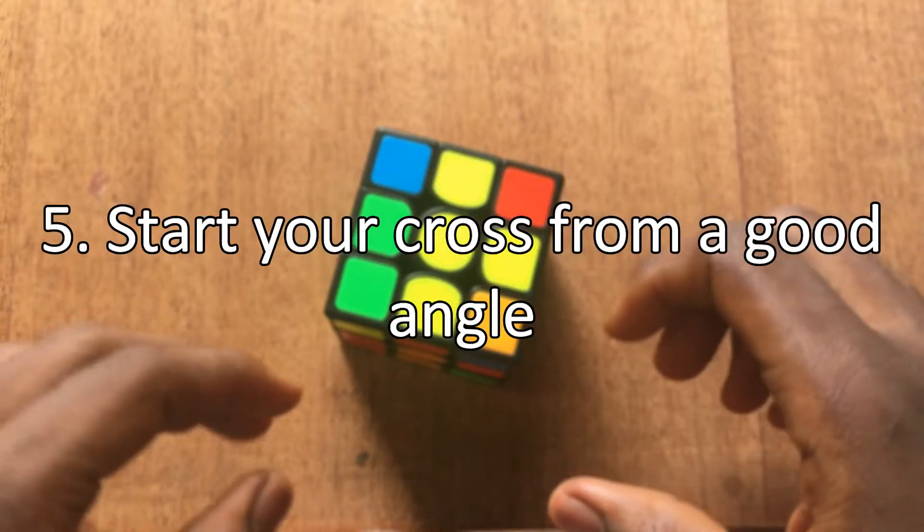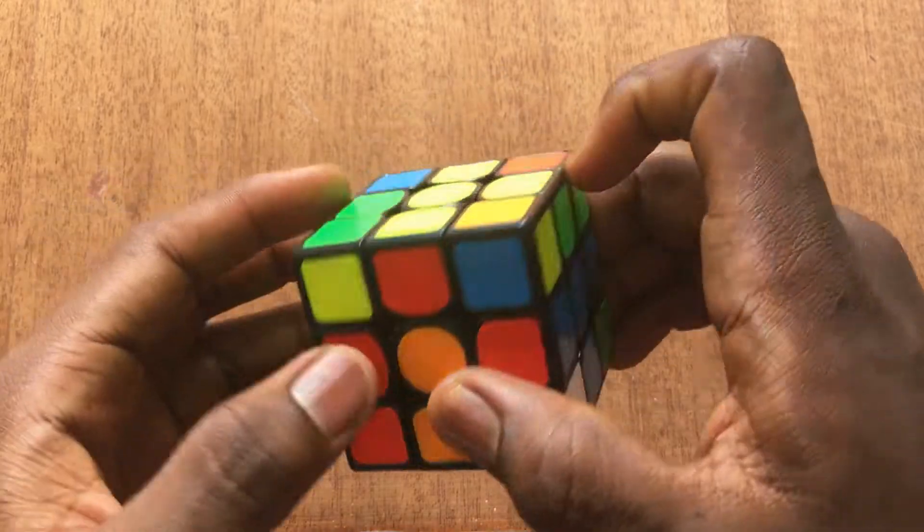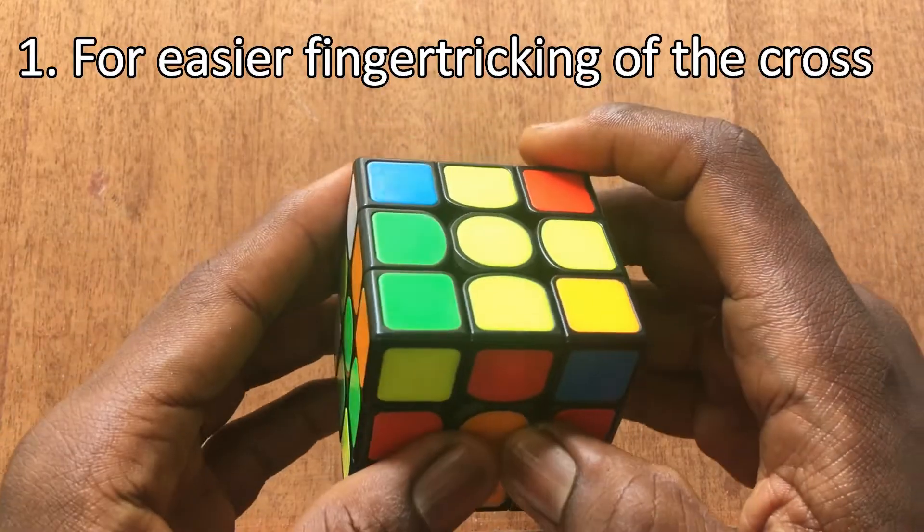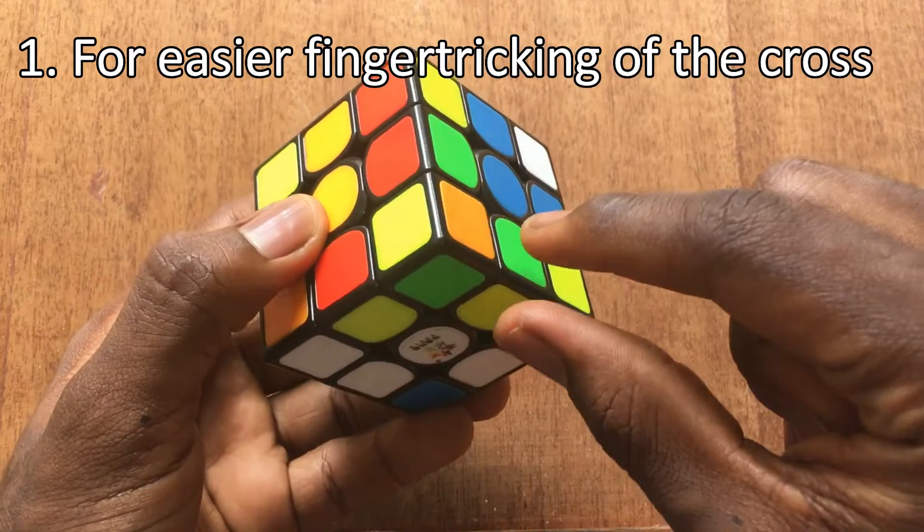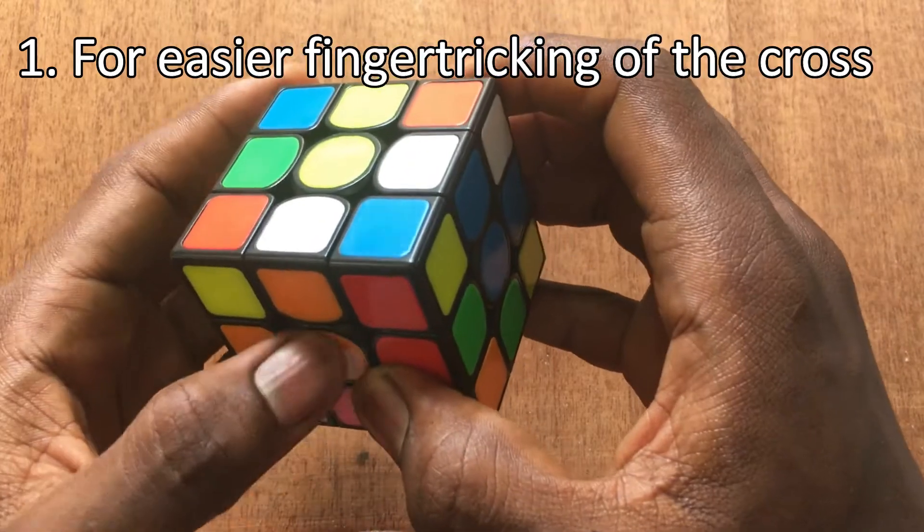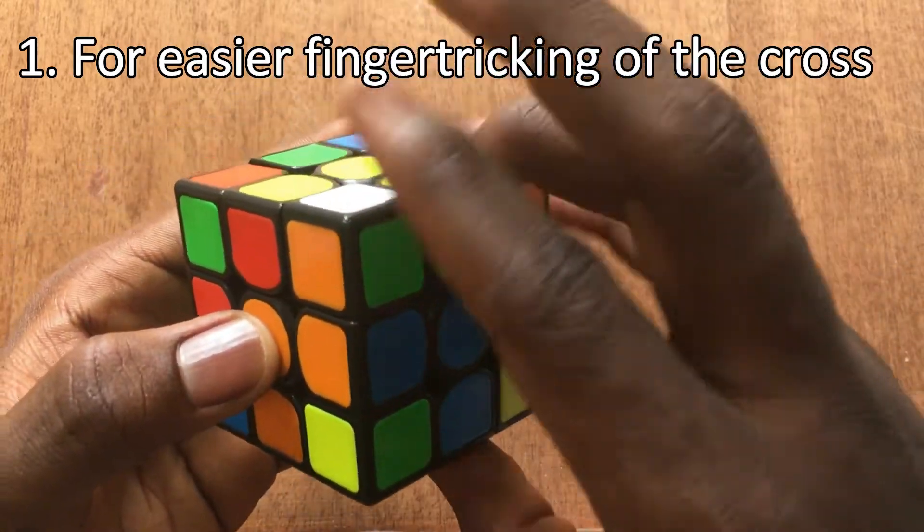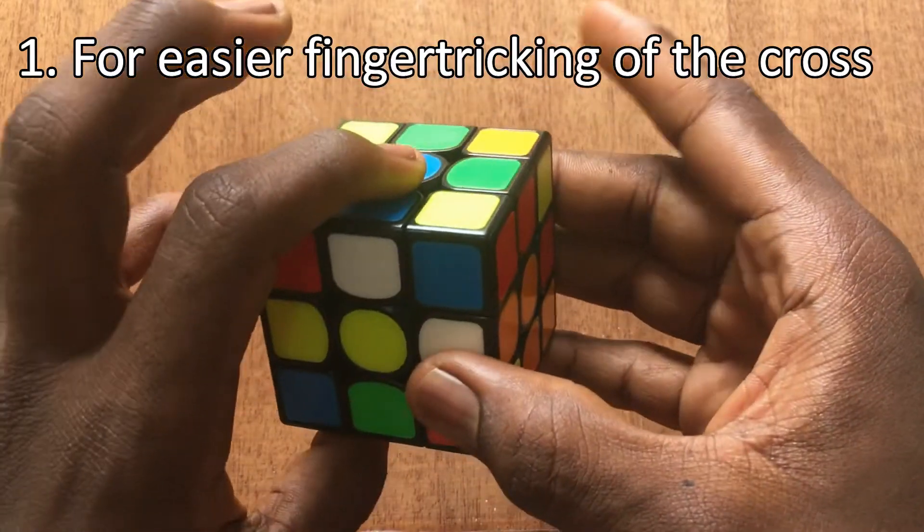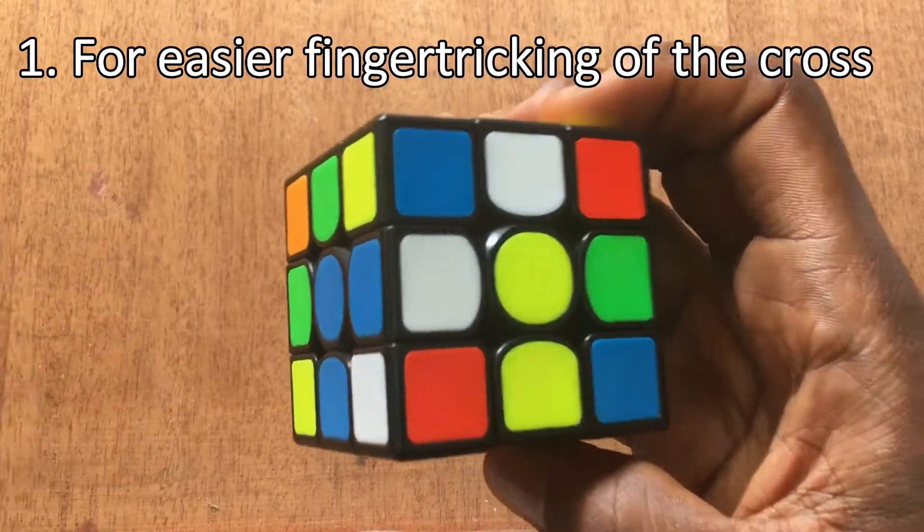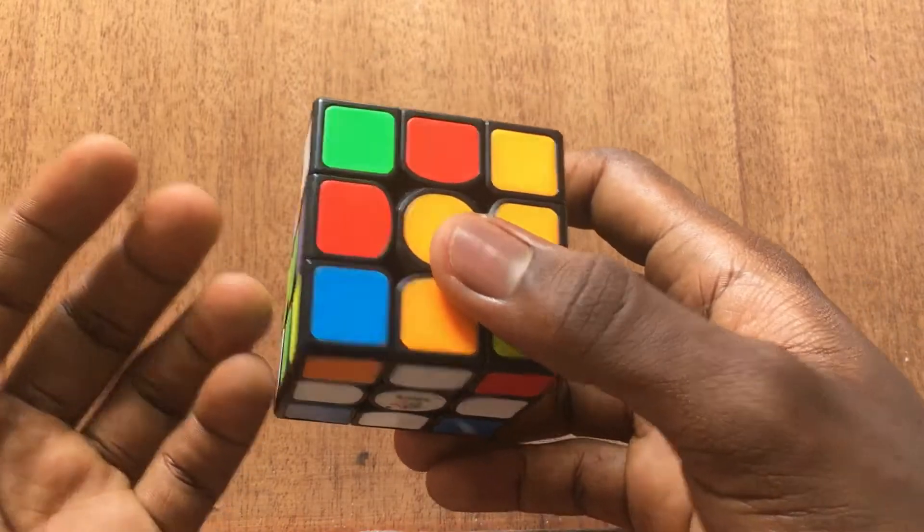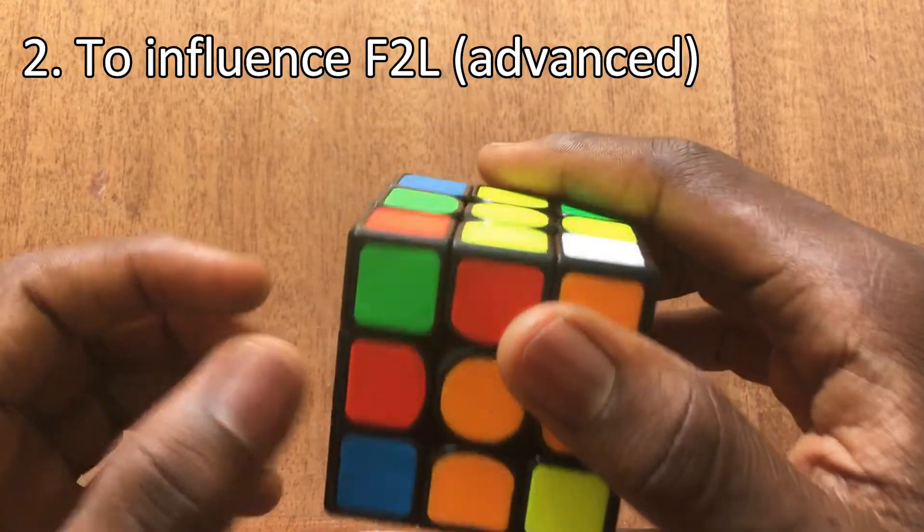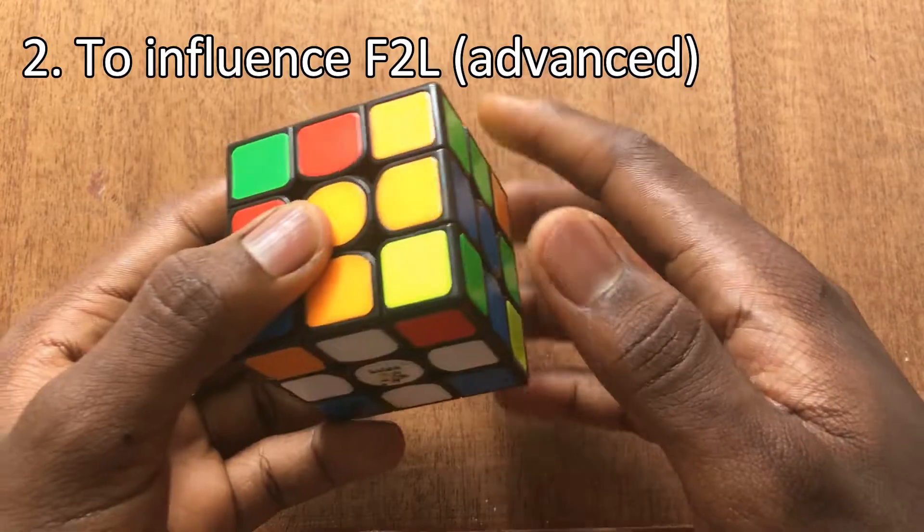Tip number 5: start your cross from a good angle. We should always try to start our cross from the perfect angle for us and why we should do this is number one for easier finger tricking. For example here I have these two cross pieces which I want to solve down here. Now probably the best angle for me to solve this cross is from this angle where I can do R2, F2. If I do it from this angle I have to deal with B moves which are not so nice. And if I do it from this angle it just gets more awkward. The second reason for starting your cross from a good angle is to influence your F2L up here, but this is kind of an advanced technique. For now we should just focus on solving our cross from a good angle for better finger tricks.